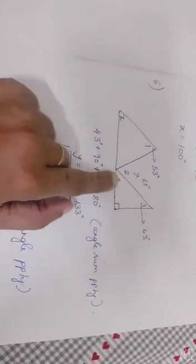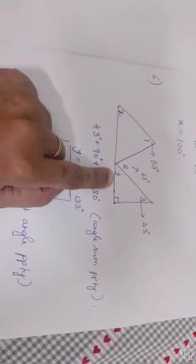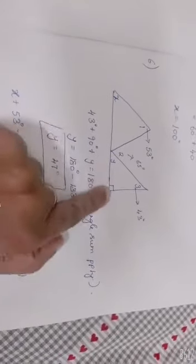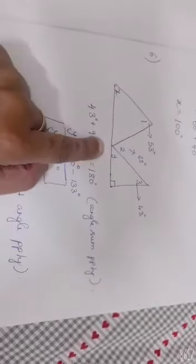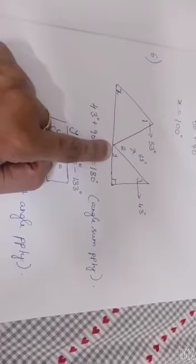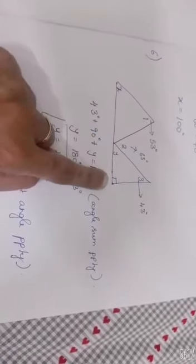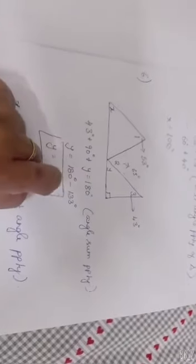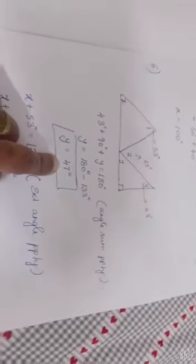Coming to the sixth question, you are asked to find the value of x and y. For that, see this is 90 degrees, this is given as 43 degrees, which means using the angle sum property, you can find the value of y. Y is nothing but 180 minus 90 plus 43. From there, you will find the value of y as 47.